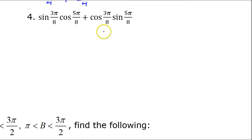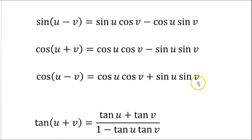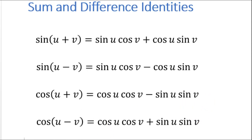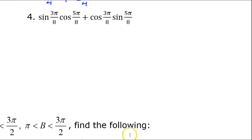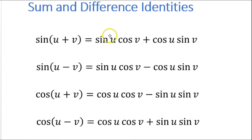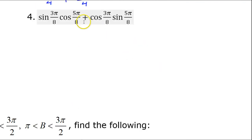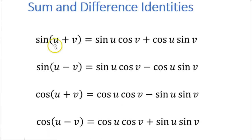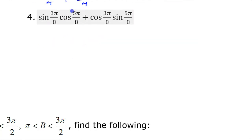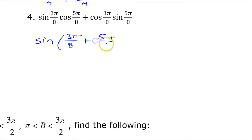Problem number 4 is set up a little bit differently. This time we're given an expression in the form of one of our sum/difference formulas — can you recognize which formula it is? I see sine, cosine, cosine, sine. That's one of the sine formulas. It has addition, and when it comes to the sine formula, if the formula has addition then it was addition to begin with. So this must be the sine of an angle plus another angle. Obviously these are the two angles, so I should be able to rewrite this as sine(3π/8 + 5π/8).